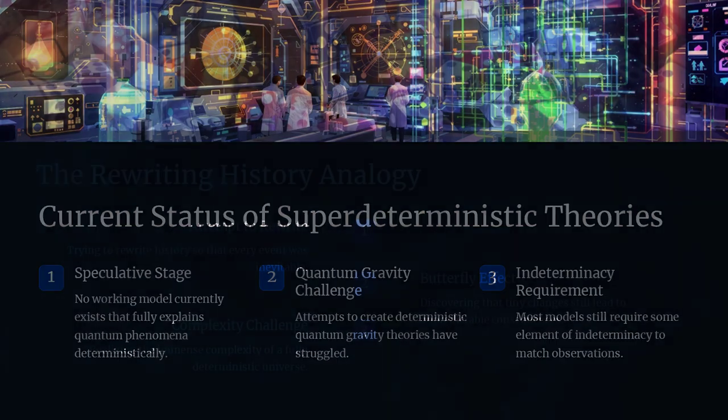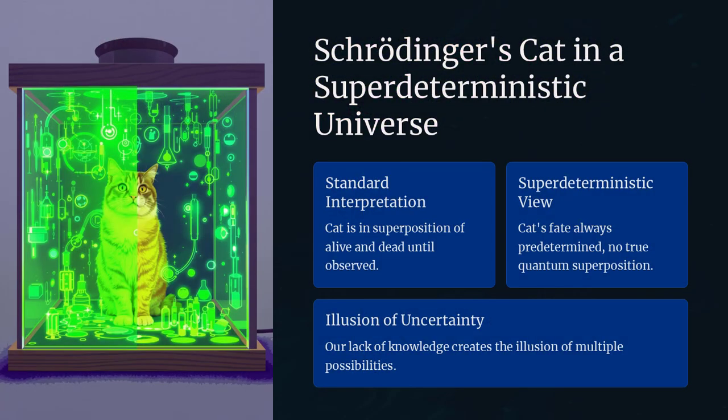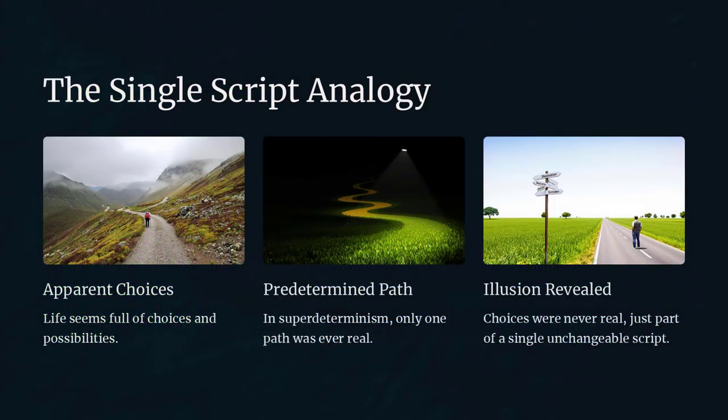If true, this would mean that all experimental outcomes were fixed from the beginning of time, not just the quantum states, but even the very decisions of scientists conducting the experiments.